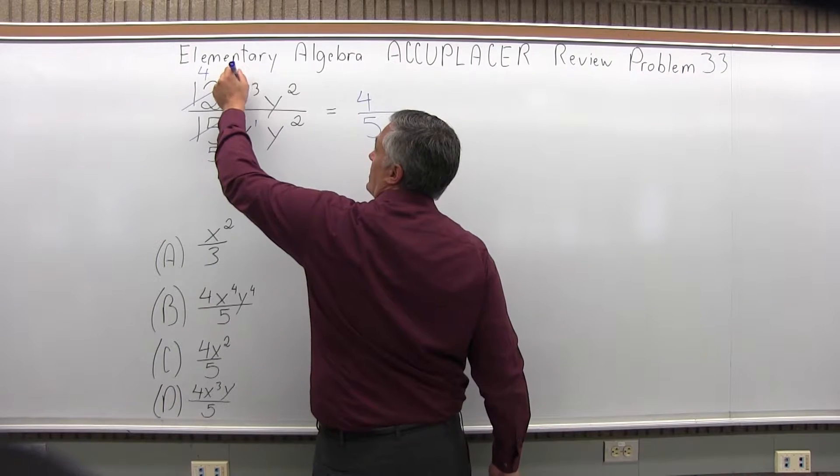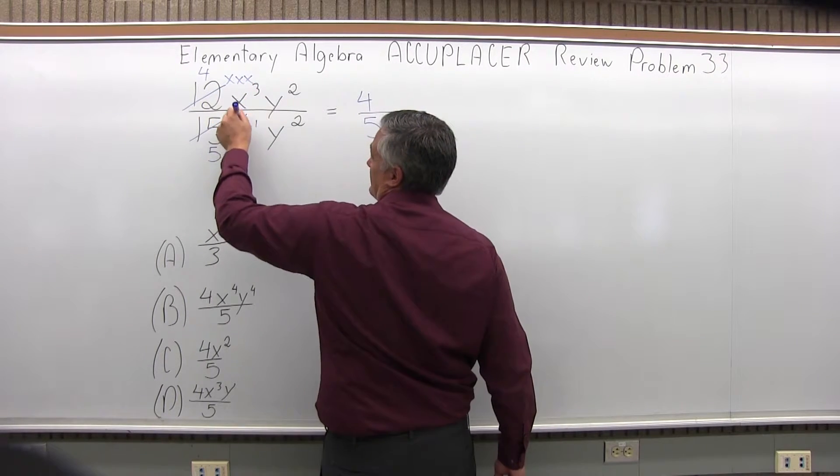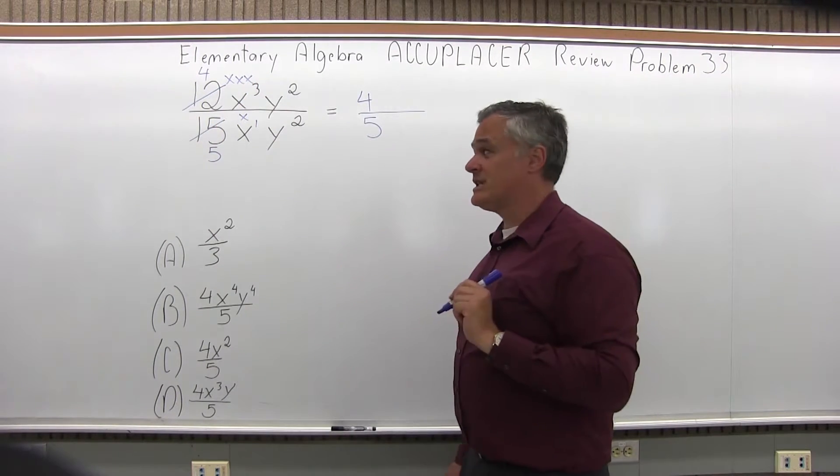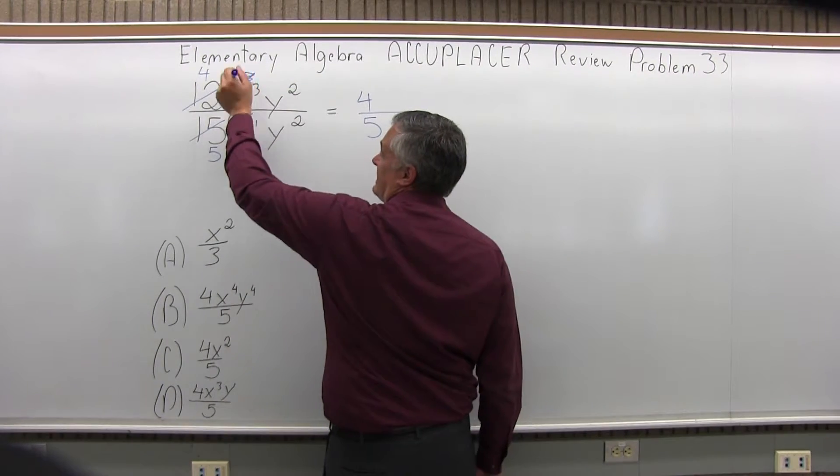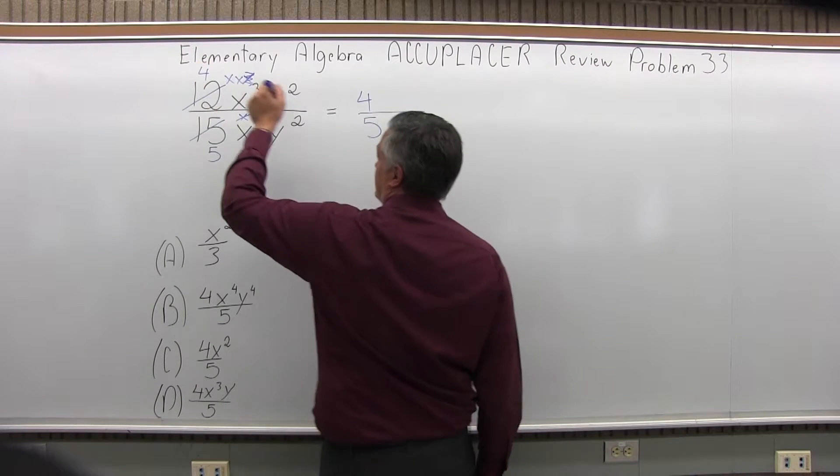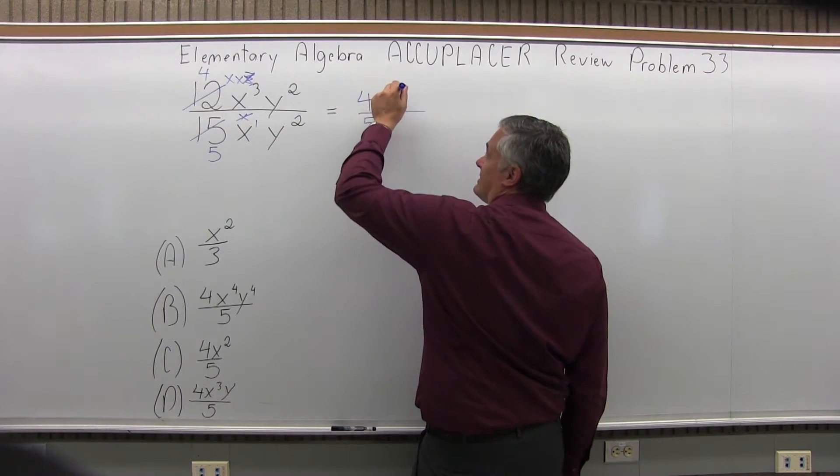Or if you want, the numerator x to the third is an xxx and the denominator x to the first is just an x. So just the x in the denominator will cancel one of the three x's in the numerator leaving you with just xx or x to the second, again, still up in the numerator.